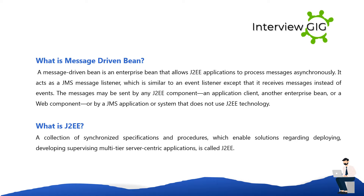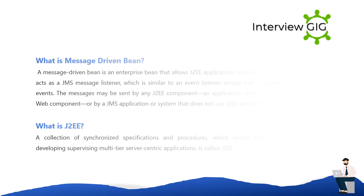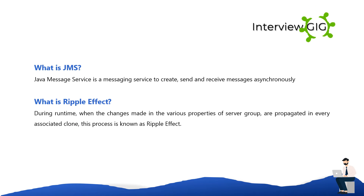What is J2EE? A collection of synchronized specifications and procedures which enable solutions regarding deploying, developing, and supervising multi-tier server-centric applications is called J2EE. What is JMS? Java Message Service is a messaging service to create, send, and receive messages asynchronously.